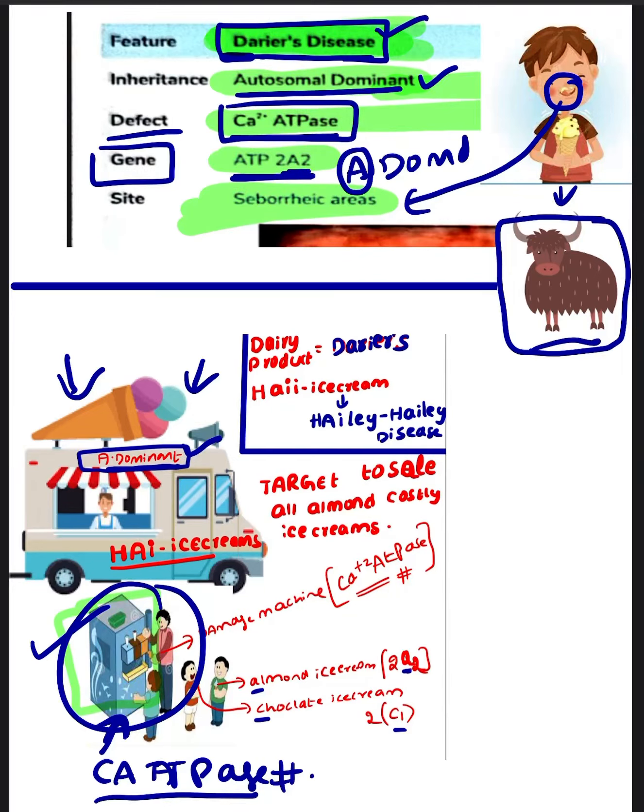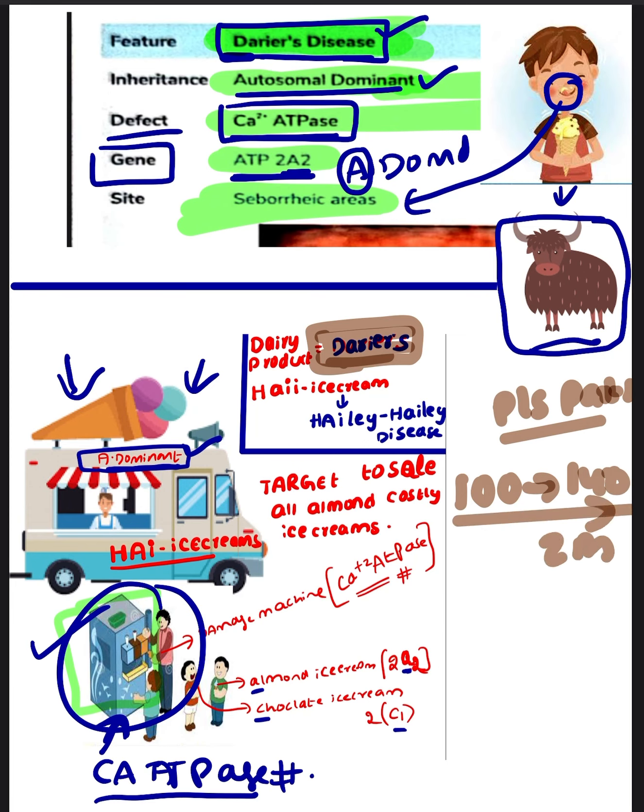Hi friends, now I'm going to discuss Darier's disease with you. Please watch part 1 first. In part 1, I explained all the mnemonics about Darier's disease and Hailey-Hailey disease. If you watch part 2 directly, you won't understand my mnemonics. These mnemonics helped me a lot in my PG preparations, from which I scored 140 out of 100 range within two months because of these mnemonics.